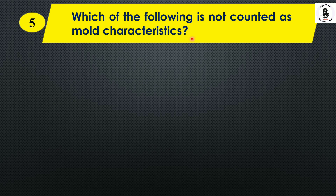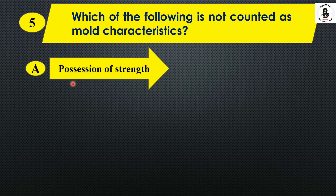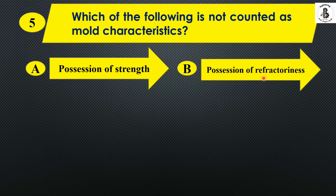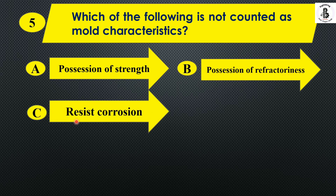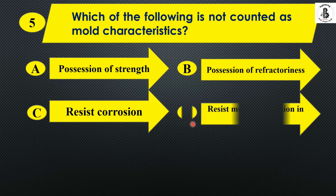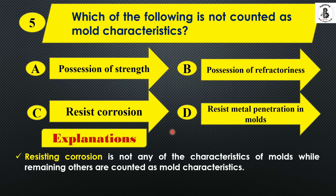Question 5: Which of the following is NOT counted as a mold characteristic? Option A: possession of strength. Option B: possession of refractoriness. Option C: resist corrosion. Option D: resist metal penetration in the mold. Resisting corrosion is not a characteristic related to molds, while the remaining three are counted as mold characteristics. So the right answer is Option C.